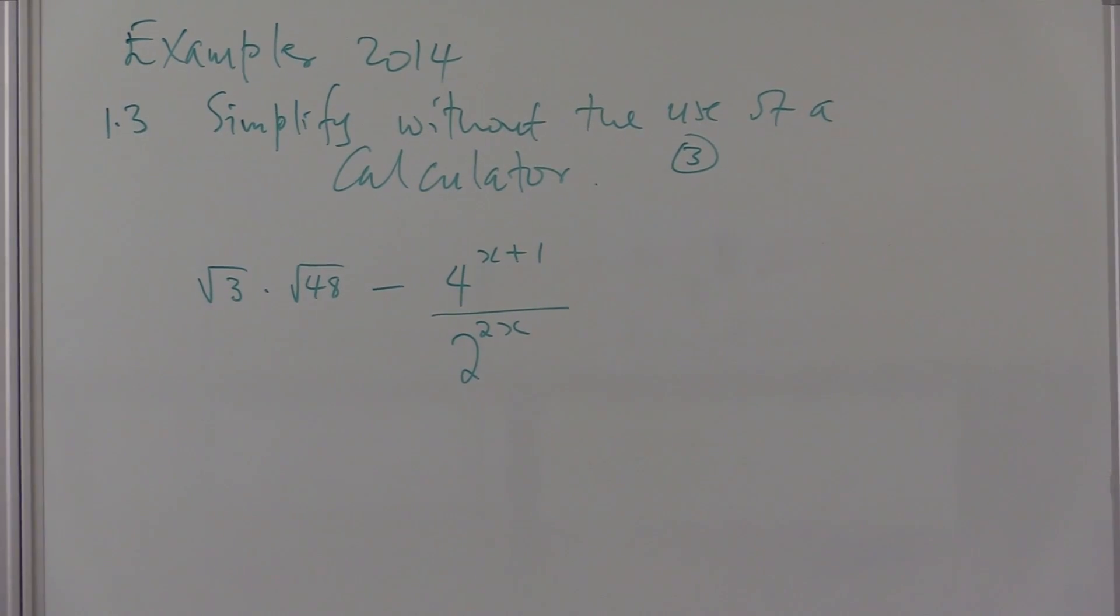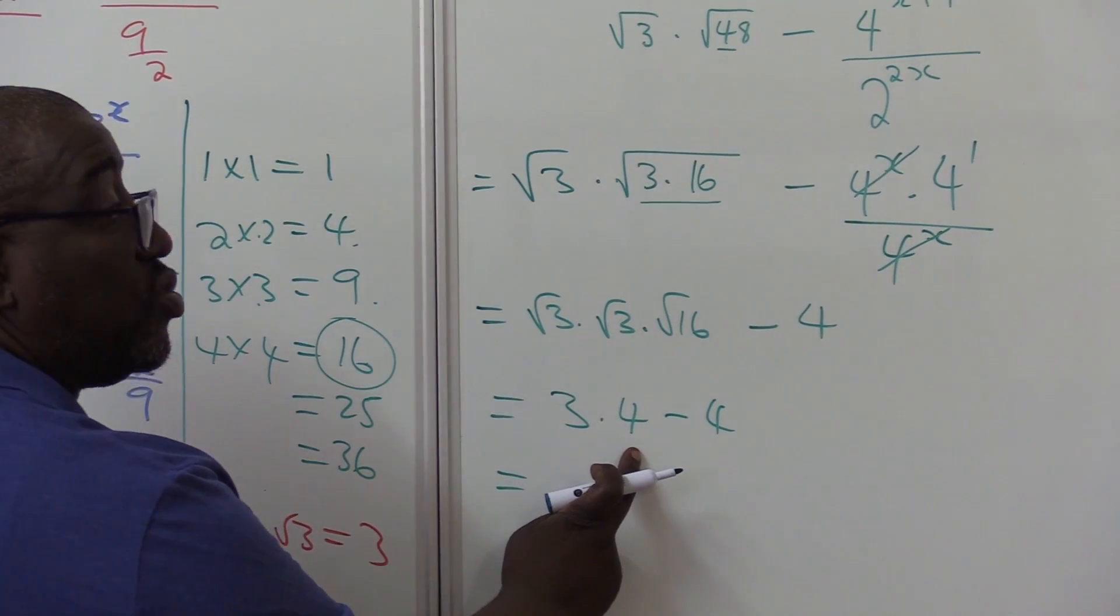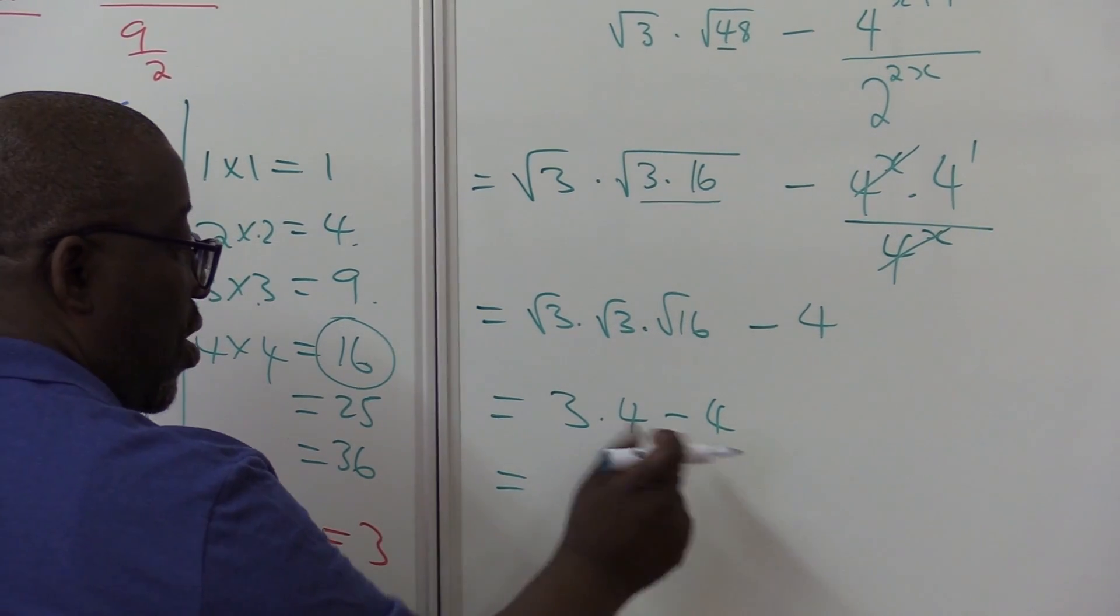This is what we have. We need to simplify this without the use of a calculator. What is 3 times 4? It is 12. What is 12 minus 4? It is 8.